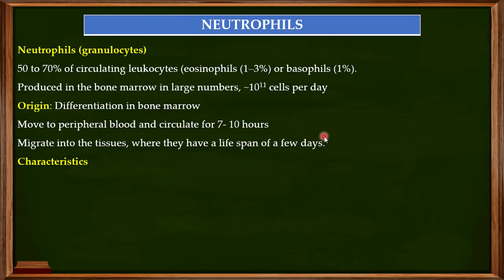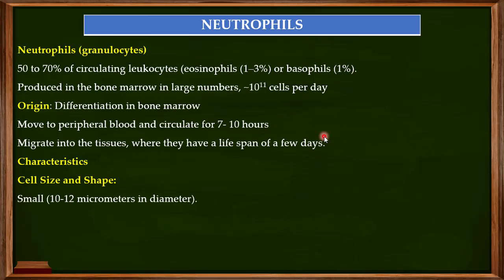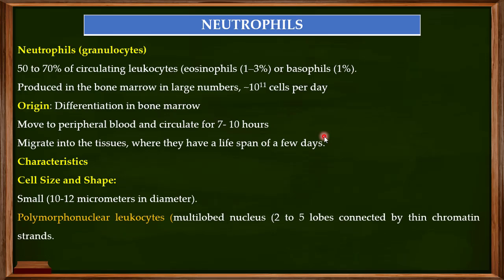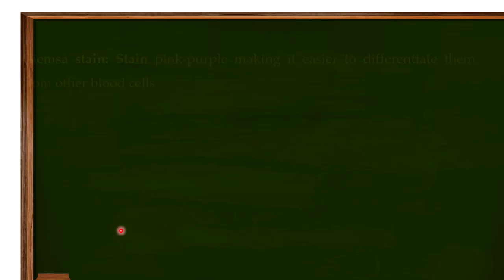Regarding their characteristics, neutrophils are very small — about 10 to 12 micrometers in diameter — and their nucleus is multi-lobed. Therefore we place them into a particular class of leukocytes known as the polymorphonuclear leukocytes.